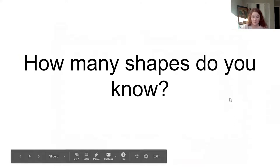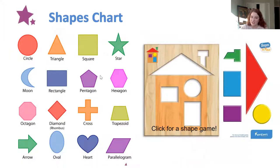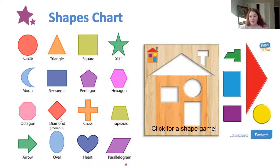Do you know about the moon or crescent shape? How about the five-sided shape that's called a pentagon? Star, cross, heart, oval, diamond, which is a rhombus. See how many shapes you know.